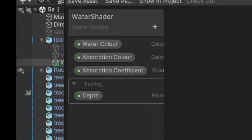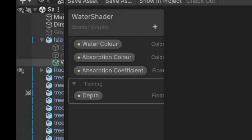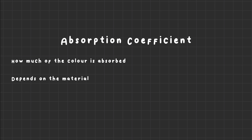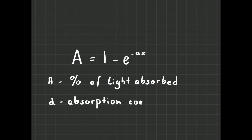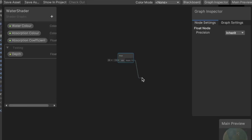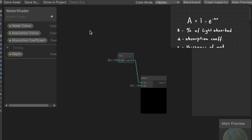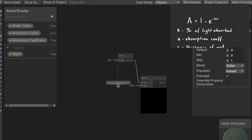So to implement this, we need a color to be absorbed and an absorption value — how much of this color should be absorbed? An absorption coefficient is a measurement of how far light can travel through a material before it's fully absorbed. This is different for different wavelengths and different materials. We have the following formula, where alpha is the absorption coefficient, a is the percentage of light being absorbed, and x is the thickness of the material. Let's set a property for the thickness of the material, even though we will eventually have this based on the depth of the water.